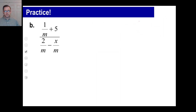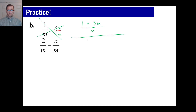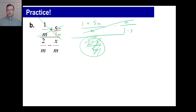Pause it and try part b. The top is a mess, the bottom is easier — let's work with the top first. Put the 5 over 1, and the common denominator is m, so multiply by m on both sides. Now we have 1 plus 5m on top and m on the bottom. Since both parts of the denominator share the same denominator m, write it as one fraction: 2 minus x over m. Flip and multiply — that's m over 2 minus x. The m's cancel. Our whole answer is 1 plus 5m over 2 minus x.